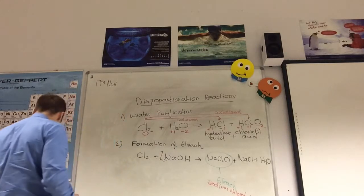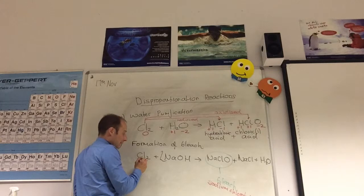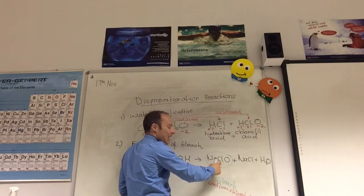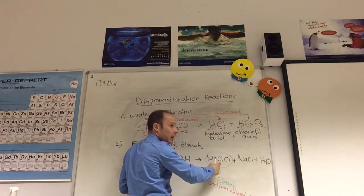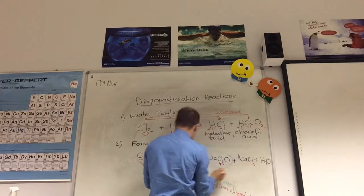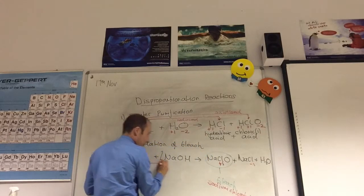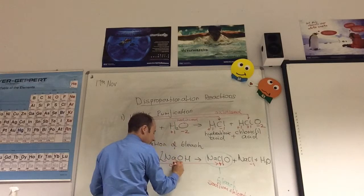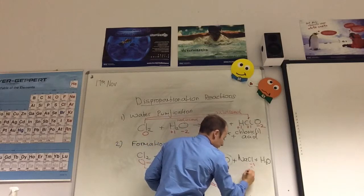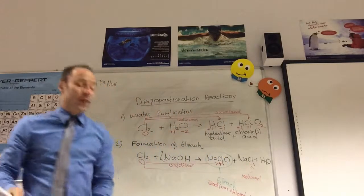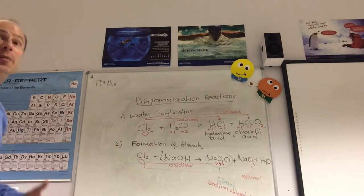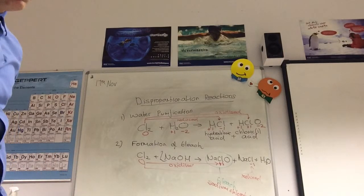So let's do our oxidation numbers for this now. Chlorine is going to be zero. In chlorate(I), the one in the name is going to be plus one. And in NaCl is going to be minus one. So chlorine, there to there, has been oxidized. But there to there has been reduced. So another lovely example of a disproportionation reaction, where one atom is oxidized and the other atom is reduced, but it's of the same element. That's the key thing to remember.